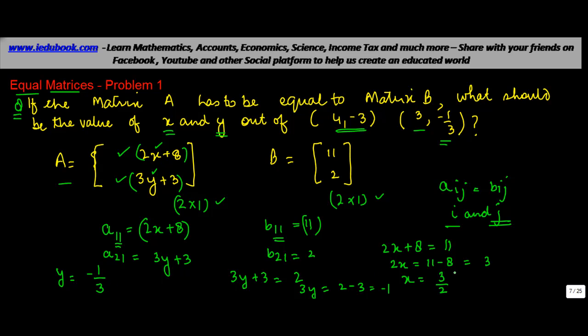Now, if you notice, x is equal to 3 by 2 here, y is equal to minus 1 by 3 here. But in none of these two cases, the value of x is equal to 3 by 2. Hence, the value of x and y cannot be out of these two. The value of x and y has to be 3 upon 2, and y has to be minus 1 by 3.